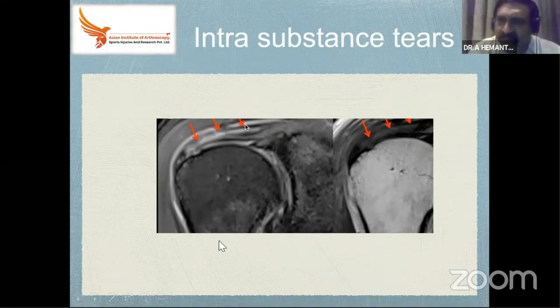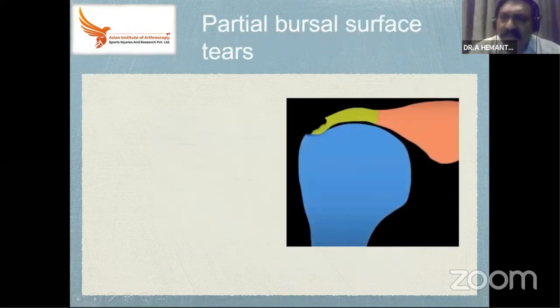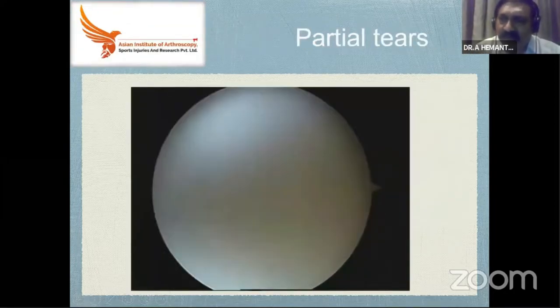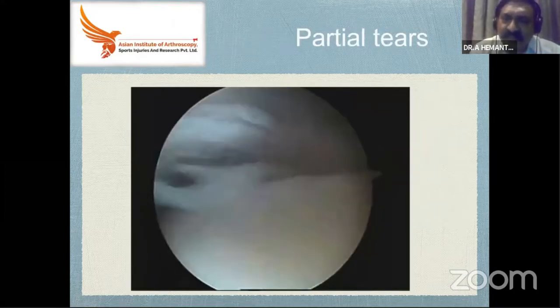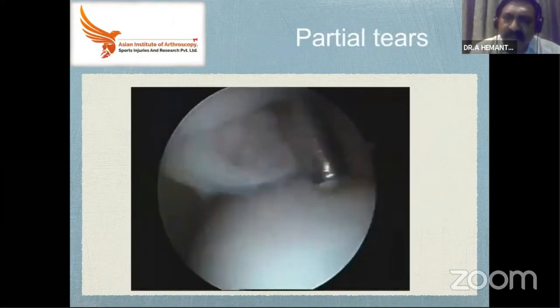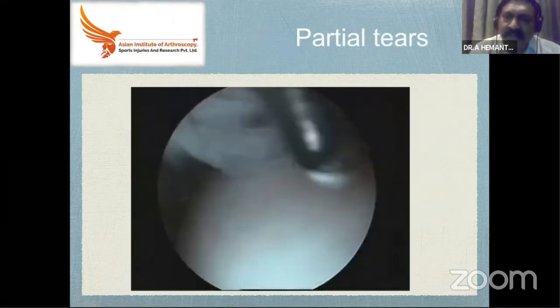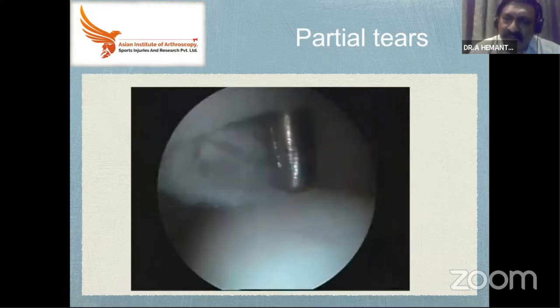In arthroscopy, you have to decide whether to repair or not — whether the partial tear is a real partial tear, or only a few fibers are attached. When you insert an instrument and open it up, that partial tear can become a complete tear.